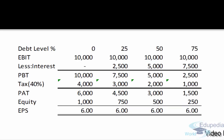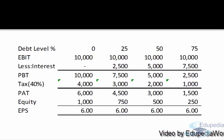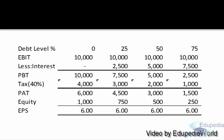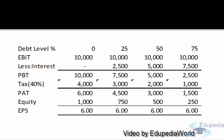But when the earnings before interest and tax increase to 10,000 rupees, the EPS at different levels is the same. So when the company has no debt, EPS is 6 rupees per share. When debt increases to 25% in the company, earning per share is also 6 rupees. So whether equity plan or debt-equity plan, the earning per share is same. This means that at a 10,000 level of EBIT, this is the indifference point for the company.